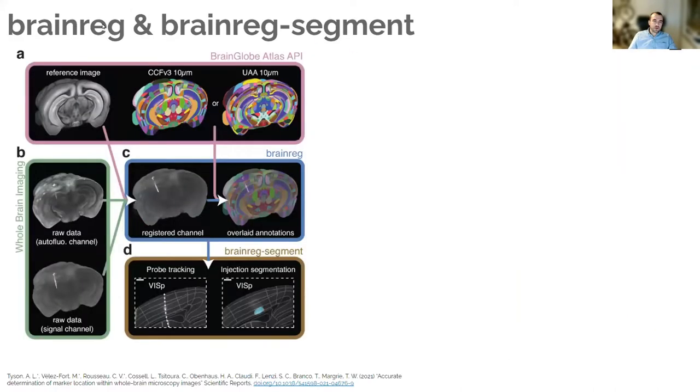The tools I'm going to talk about are part of the BrainGlobe ecosystem of tools. There are two tools that are relevant here. One is BrainReg, which is this 3D atlas registration tool that will warp your sample to an atlas space and also allow you to segment your brain based on atlas annotations. And BrainReg-segment, which is a general purpose bulk structure segmentation tool that wasn't built specifically for Neuropixels probes but can be used to segment them.